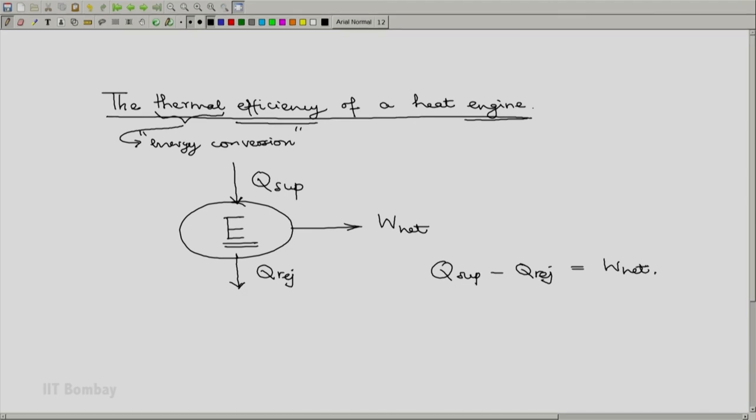And this brings us to the definition of efficiency of an engine. The efficiency of this engine, usual symbol is eta, is defined to be the net amount of work done divided by the amount of heat supplied.